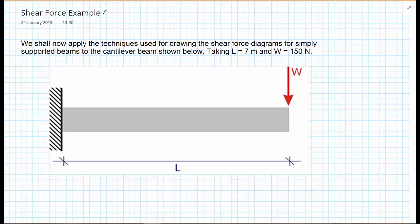In this video we're going to draw the shear force diagram for a cantilever of length L subject to a point load at the tip of the cantilever. The point load in this case will be W equals 150 newtons.